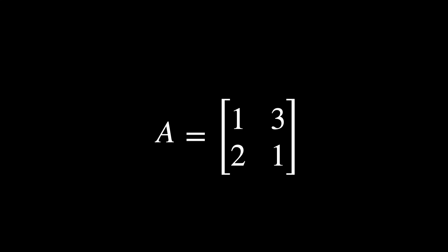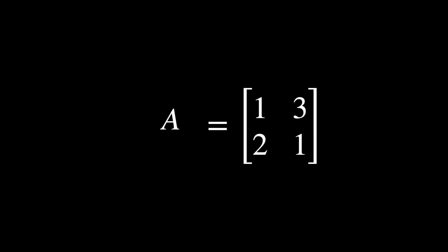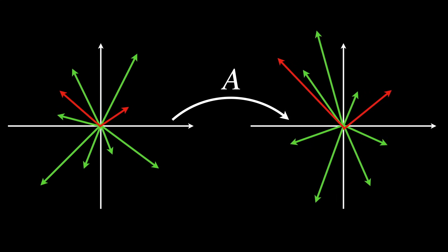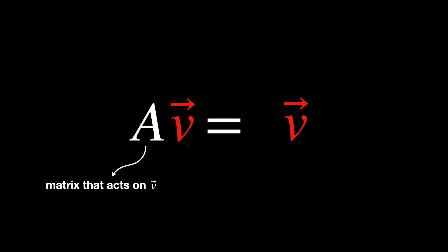We have the transformation matrix. It transforms vectors in the real plane into other vectors in the same real plane. Since we want to calculate the special vectors that do not rotate, but just get scaled by a specific factor, we need this equation to be satisfied.